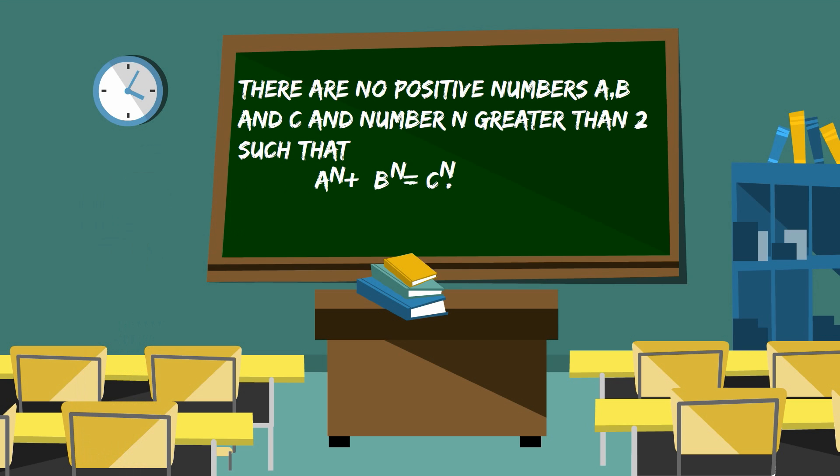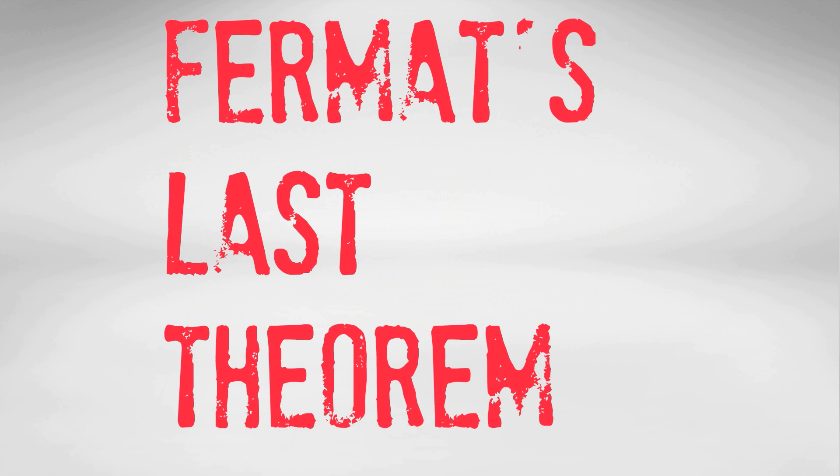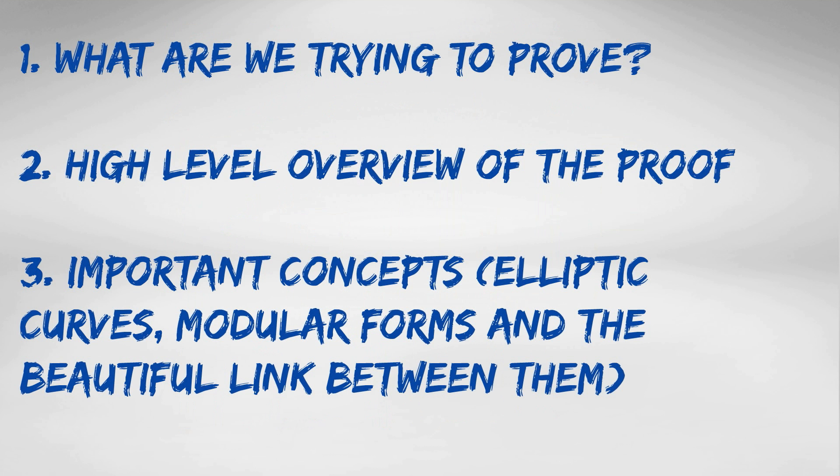What I'm going to do today is precisely what I've said in the title. This is an introduction, so it's a pretty basic level, and I'm going to confine myself to the proof of Fermat's Last Theorem. I'm going to do this in three sections. Firstly, what are we trying to prove? Secondly, a high-level overview of the proof. And then finally, I'll explain some of the characters or concepts that appear in that high-level overview of the proof.